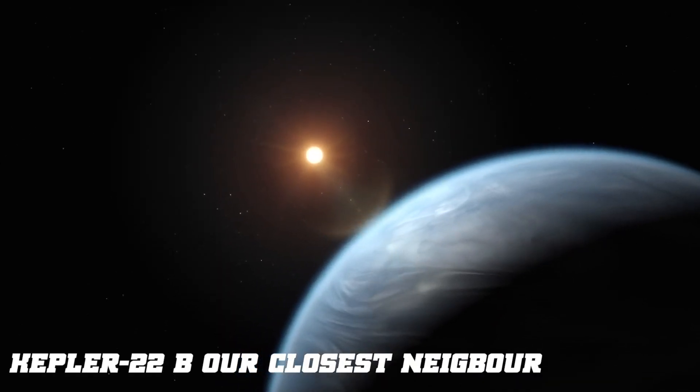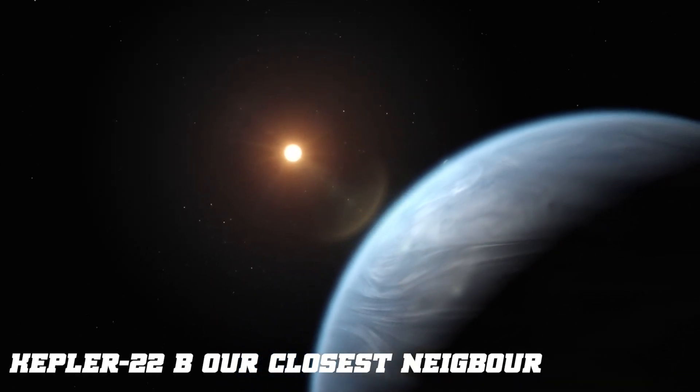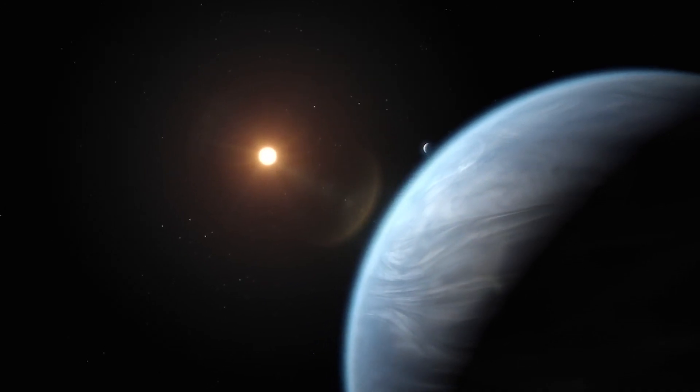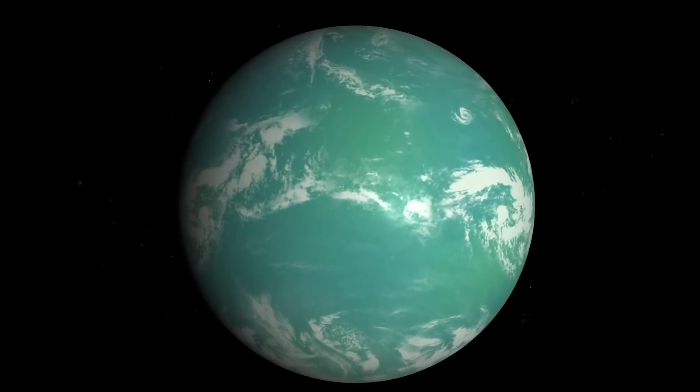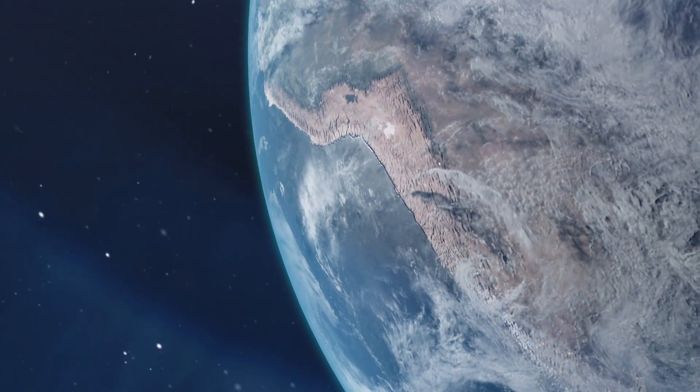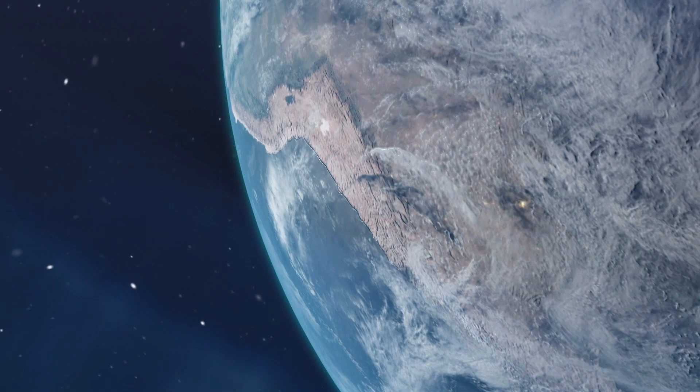Kepler-22b: Our Closest Neighbor. Amongst the many potentially habitable exoplanets, Kepler-22b is probably the most promising. Because of this, the planet is extremely celebrated, but the reason for this is twofold.